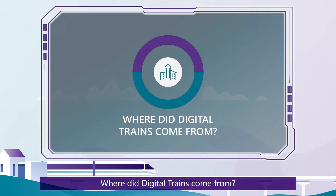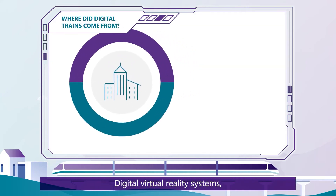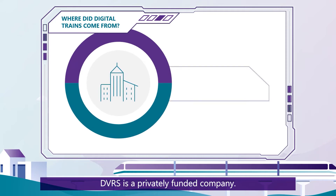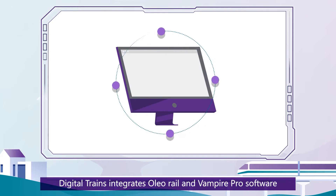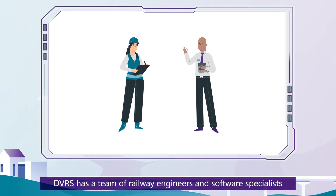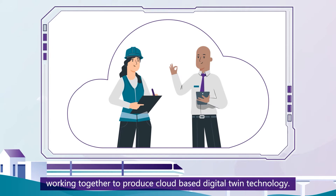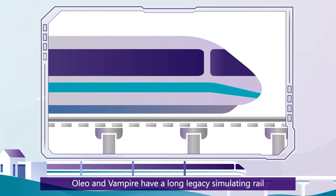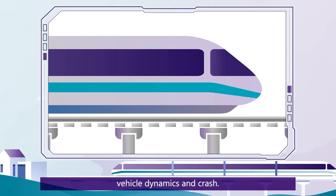Where did Digital Trains come from? Digital Virtual Reality Systems, DVRS, is a privately funded company. Digital Trains integrates Oleo Rail and Vampire Pro software with databases on a collaborative platform. DVRS has a team of railway engineers and software specialists working together to produce cloud-based digital twin technology. Oleo and Vampire have a long legacy simulating rail vehicle dynamics and crash.